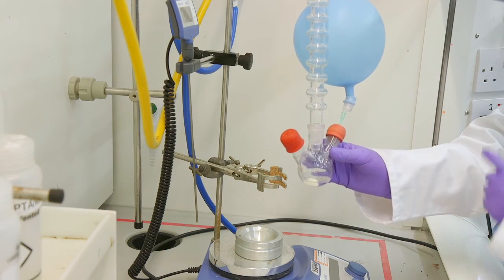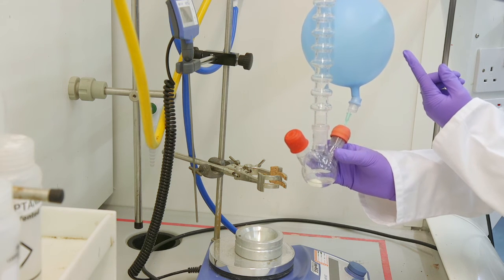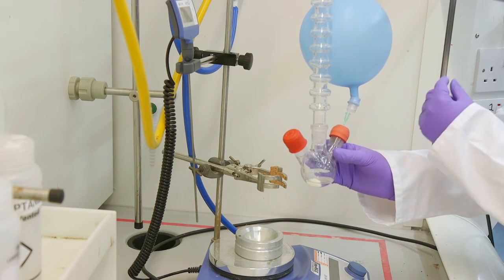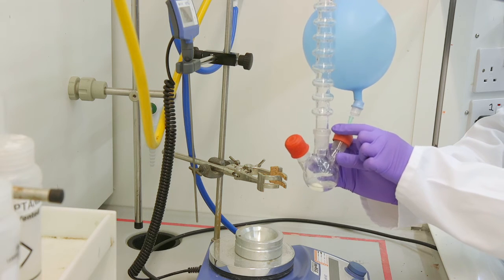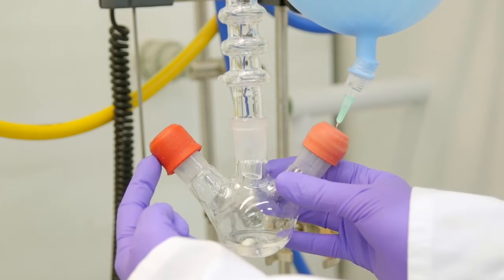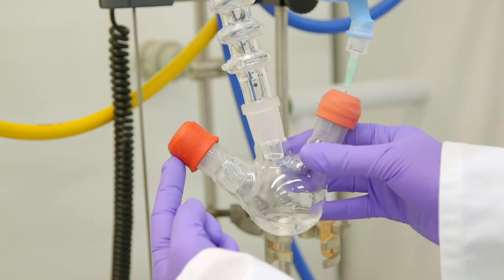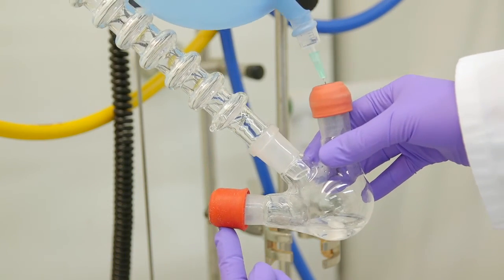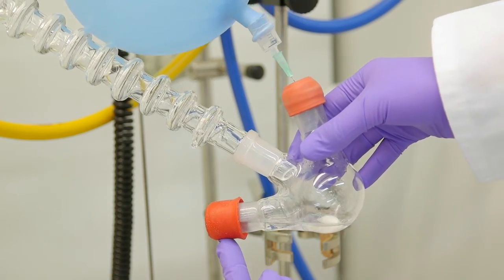We want to keep everything under nitrogen as the Grignard is air sensitive. The best way to do this is to use a double-ended filter funnel. We can connect nitrogen to the top and then connect both funnels and tilt the reaction. This will separate the magnesium turnings from our Grignard in solution.